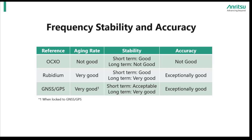Aging rate is a consistent drift in frequency in one direction for very long periods of time, which results ultimately in frequency inaccuracy. One other point to mention is that short term is defined as less than one second, and long term is defined as greater than one day.